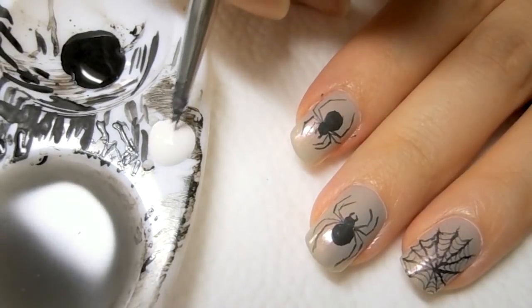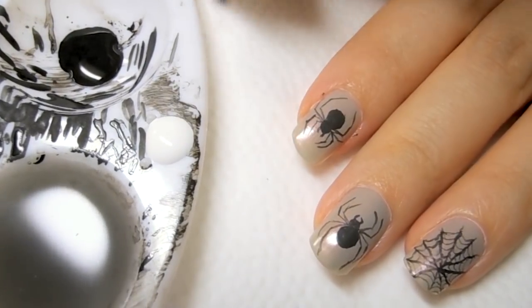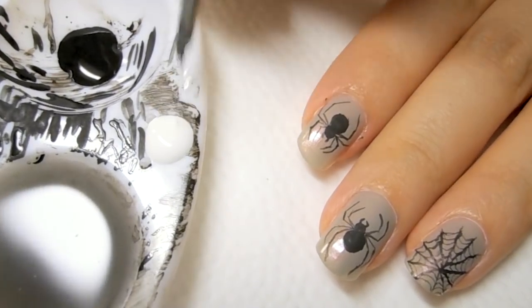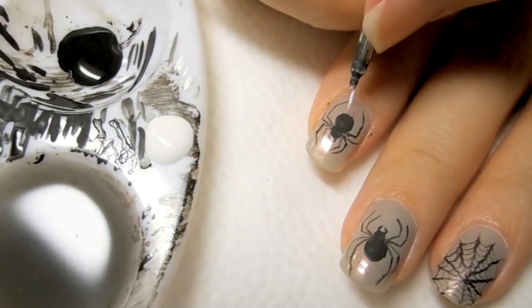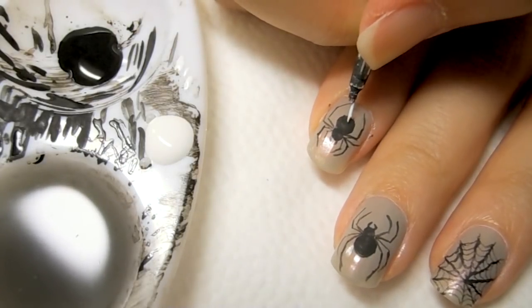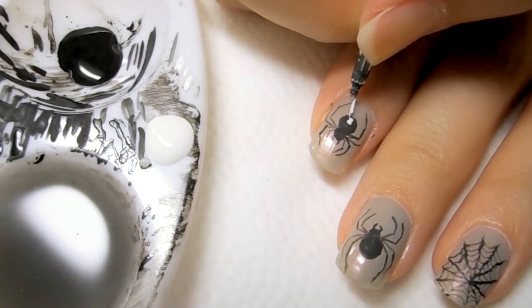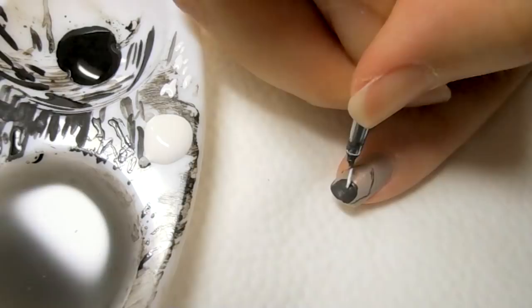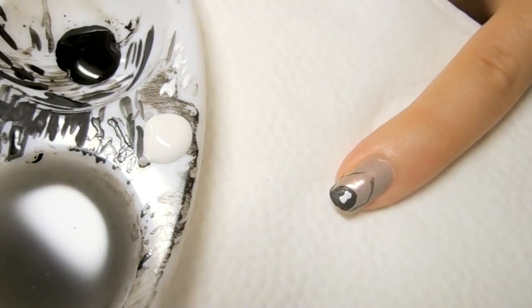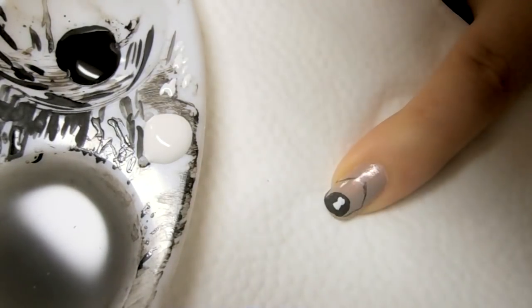We're going to put a little bit of the white on his abdomen because the red really will show up so much better if it has a white background. And we're now going to go ahead and let the white dry.